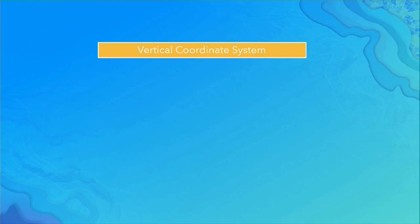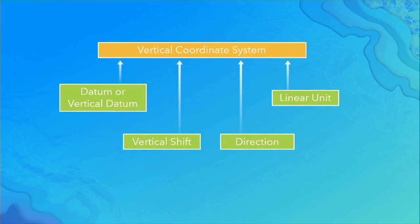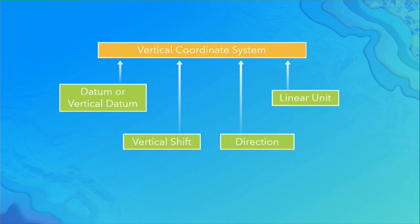In a vertical coordinate system, what do we have? We have either a datum or a vertical datum. Datum is for an ellipsoid; vertical datum is for a gravity-related model. We have a vertical shift value — an arbitrary offset you can add to any value. We have a direction: are we going up or down? And then a linear unit, usually meters, but could be feet or yards.